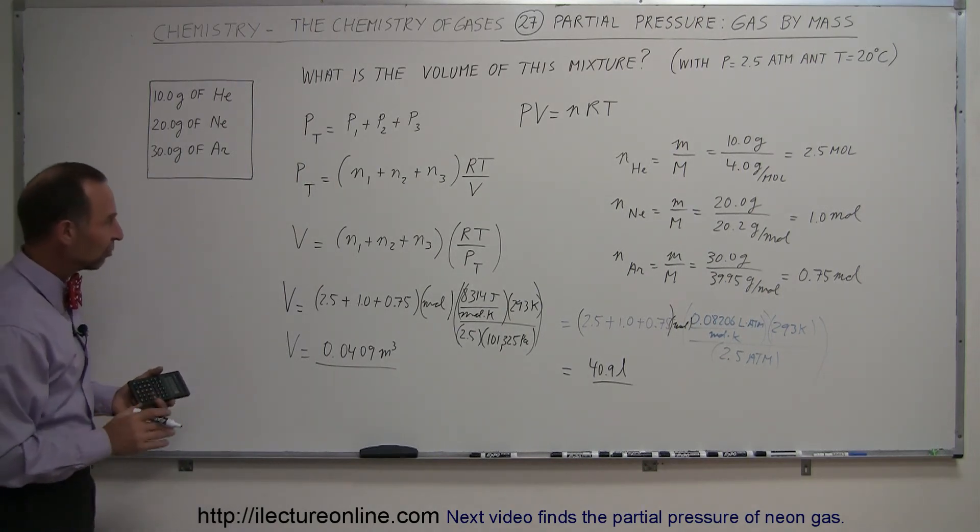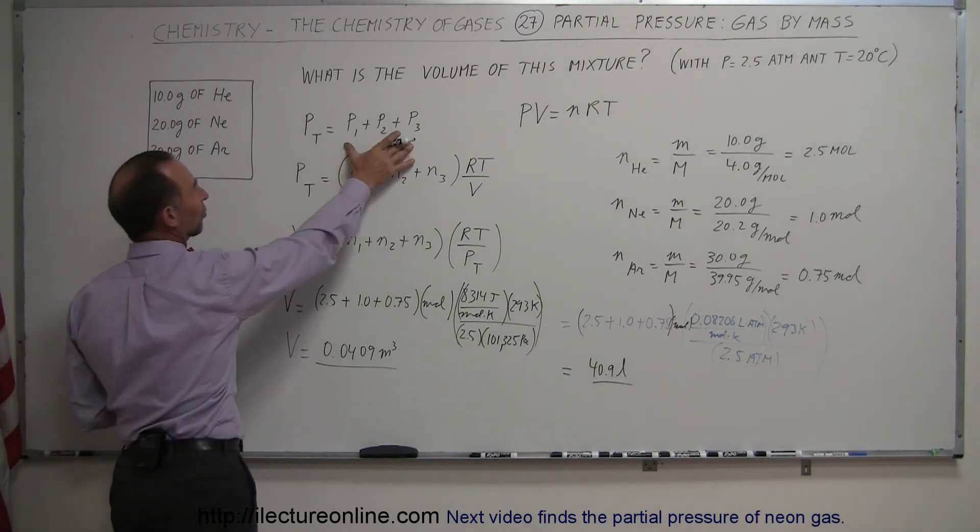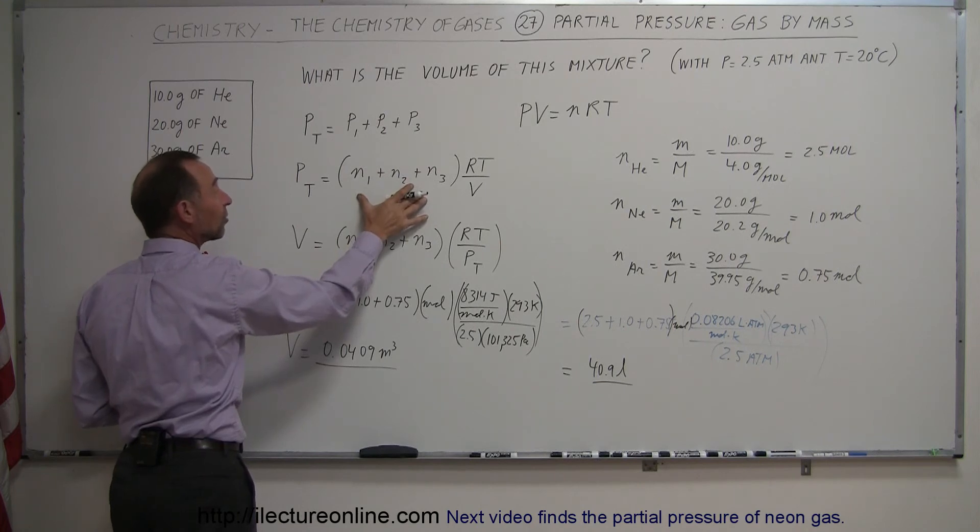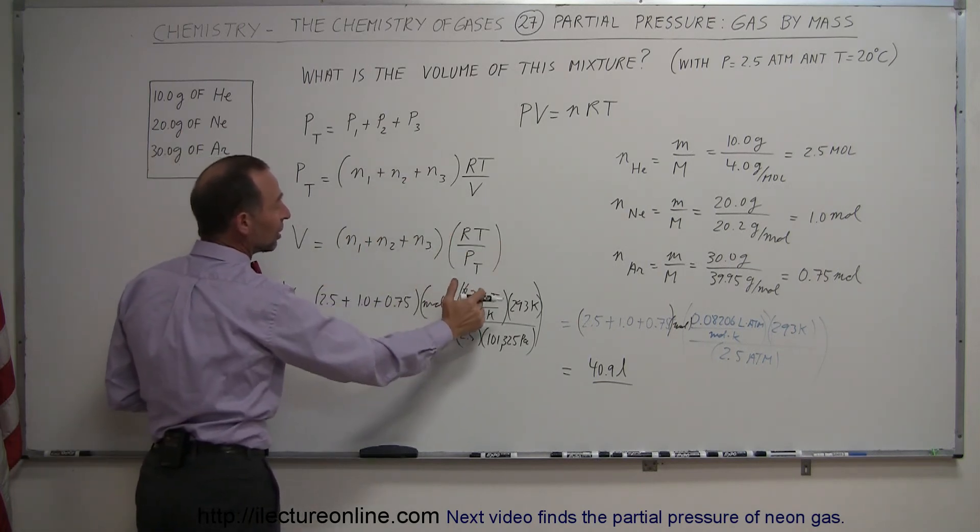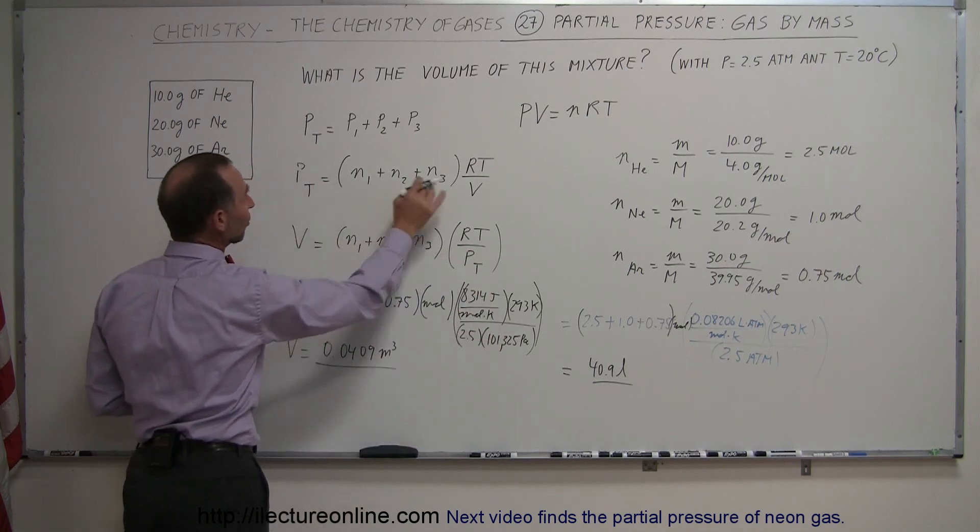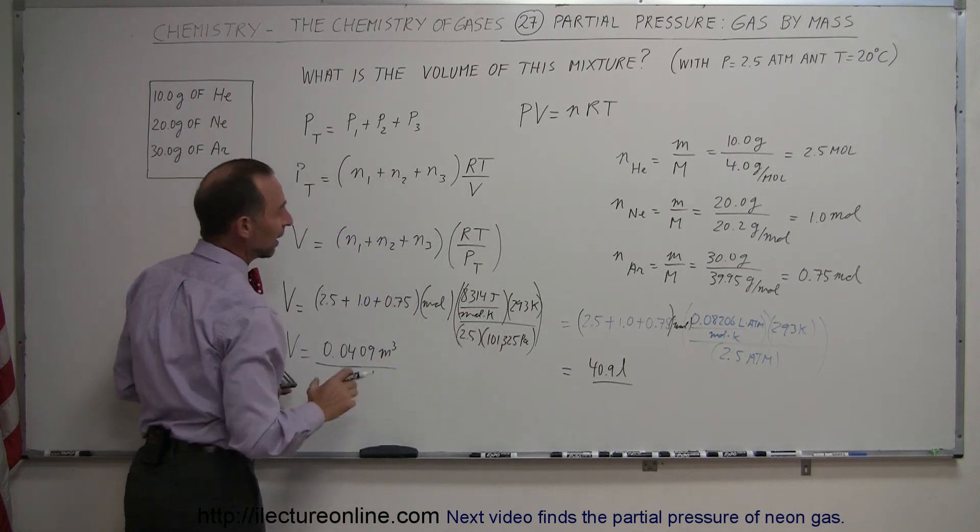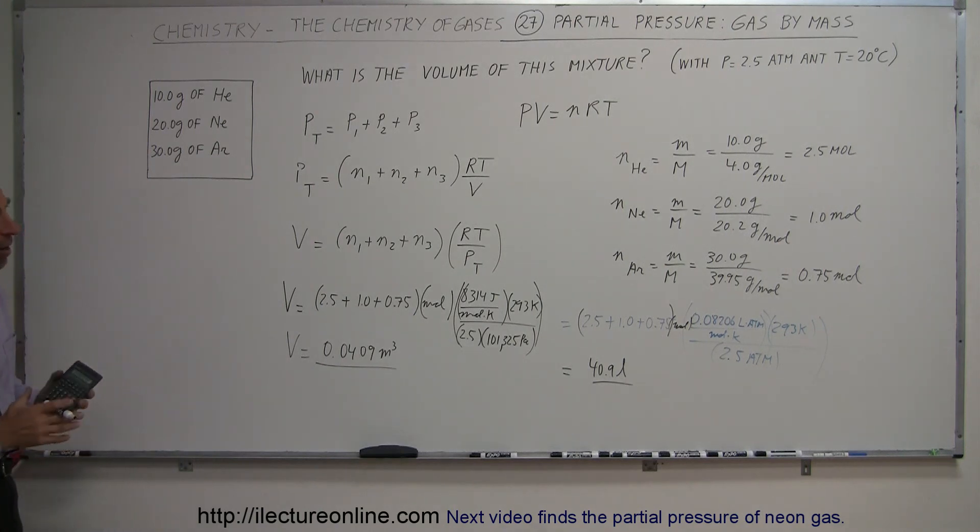The principle is that we can add the partial pressures to get the total pressure, and the partial pressures are related to the number of moles of each gas. We find the number of moles of each gas, multiply times RT over P, because in this case we reverse the P and V, and that gives us the volume of this mixture. That's how you apply the concept of partial pressures.